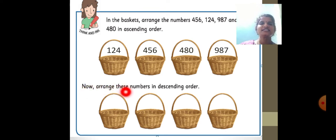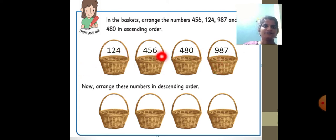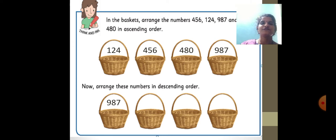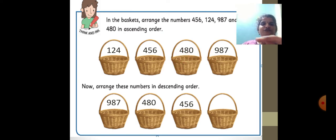Now arrange these numbers in descending order. Descending order is the reverse process of ascending order. If given the same numbers, write directly from biggest to smallest: 987 first, then 480, then 456, and finally the smallest number is 124.